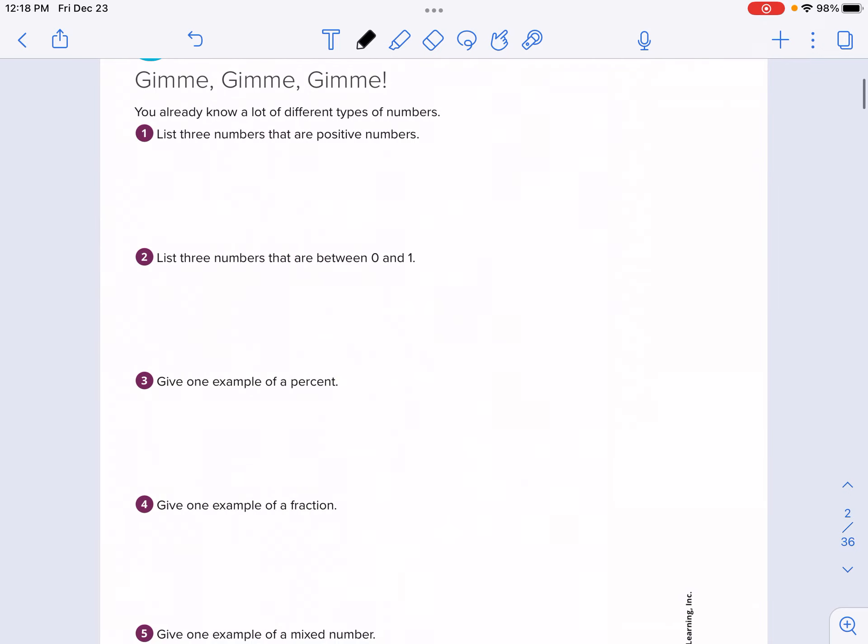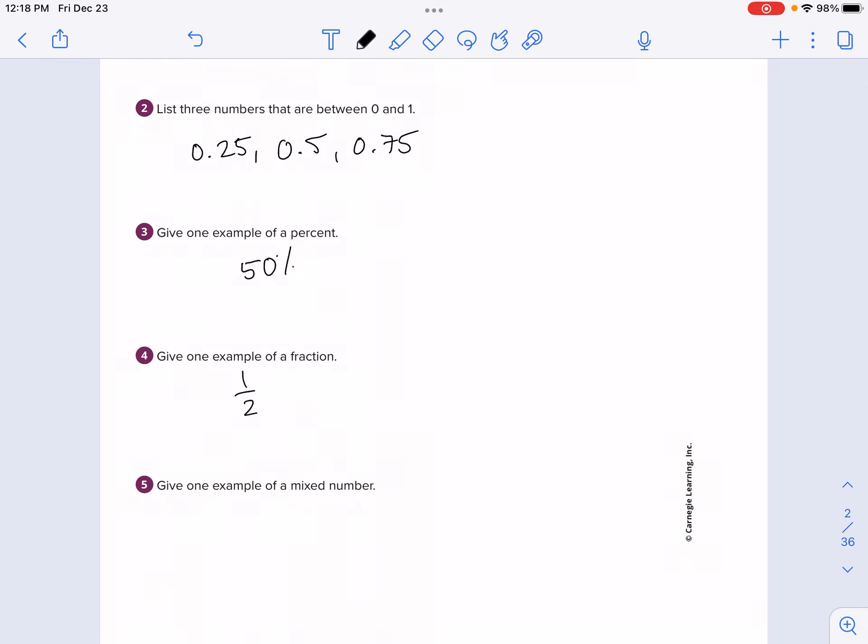You're welcome to try the other ones, but let's move on to the next page on getting started page 516. We're just going to give some examples here. Number one, list three numbers that are positive numbers: one, two, and three. List three numbers that are between zero and one, might be fractions or decimals: 0.25, 0.5 and 0.75. Give one example of a percent: 50%. One example of a fraction: one over two. An example of a mixed number: one and three fourths.